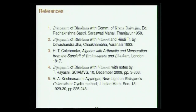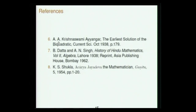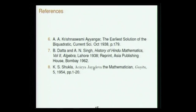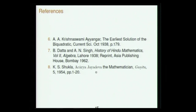Krishna Swamyangar's paper first proved that Bhaskara's cyclic Chakravala method invariably leads to a solution of the Varga Prakriti (quadratic indeterminate) equation, and showed it is more optimal than the Euler-Lagrange method for the Pell equation. More will be discussed in the next talk on Vijayanita. References include Krishna Swamyangar's paper on the biquadratic and Shukla's paper on Jayadeva's verses.